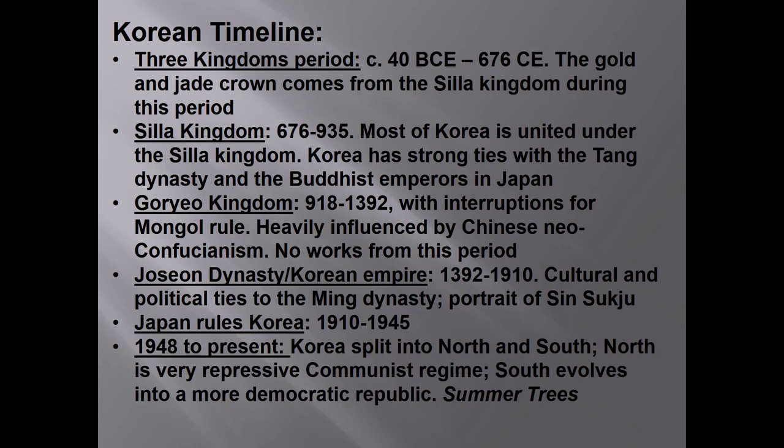Korean history is a little easier to keep straight. Silla was one of the three kingdoms, and it produced the Gold Crown. Ties between China and Korea grew much closer during the Tang Dynasty and also during the Mongol rule of the Yuan Dynasty. Korea pretty much adopted the Neo-Confucian philosophies and examination systems of China, although Buddhism remained the state religion. The Joseon Dynasty ruled about the same time as the Ming and Qing dynasties and had close ties with them. After the Japanese occupation, World War II, and Korea's split into North and South, Korea developed a dynamic economy and eventually a much freer and more democratic political system.